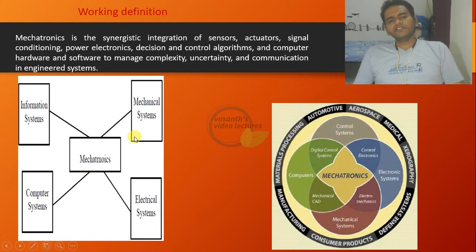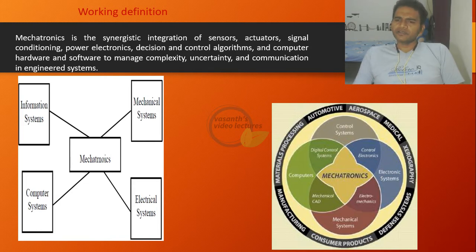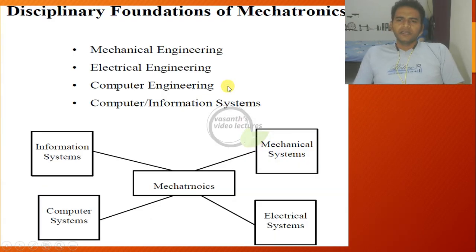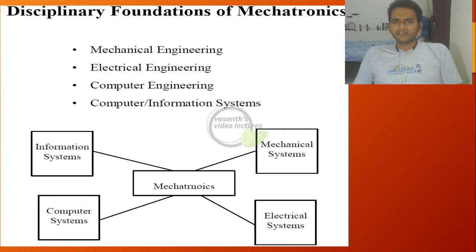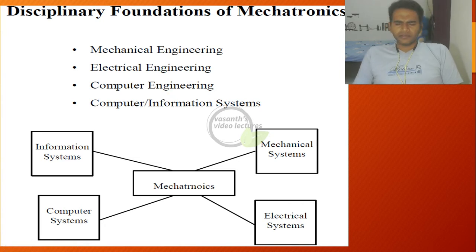In this figure we have information systems, mechanical systems, electrical systems, as well as computers and electrical systems together, which synergetically integrate to give a perfect solution for any typical realistic problem. When it comes to the disciplinary foundations for mechatronics systems, we have three basic branches: mechanical, electrical, and computers. Nowadays computers and information systems are generally considered together, so they are basically three, though here shown as four.